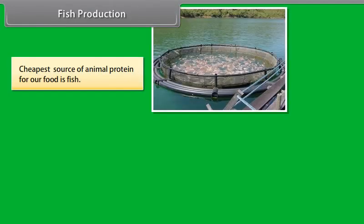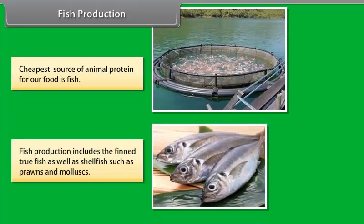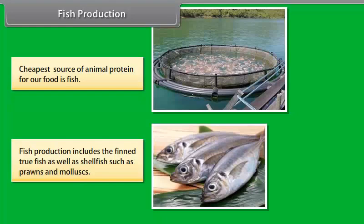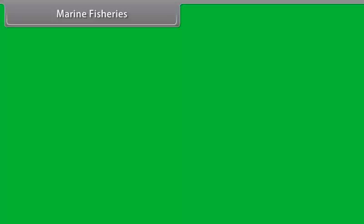The cheapest source of animal protein for our food is fish. Fish production includes true fish as well as shellfish such as prawns and mollusks. Fish can be obtained either from natural resources, which is called capture fishing, or by fish farming, which is called culture fishery.